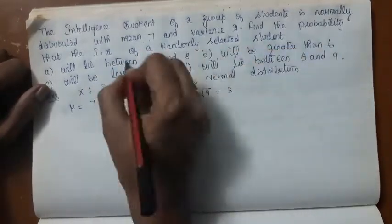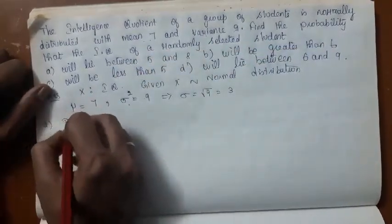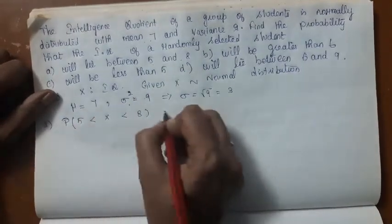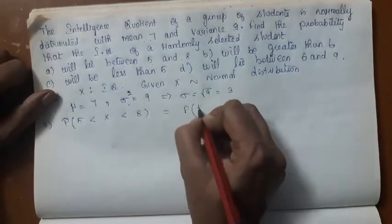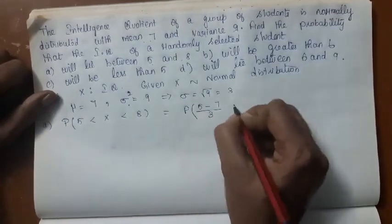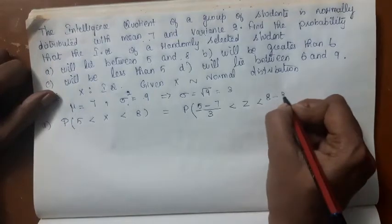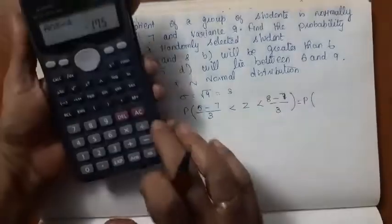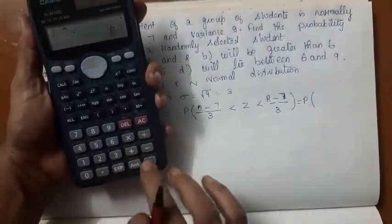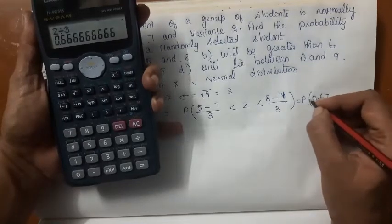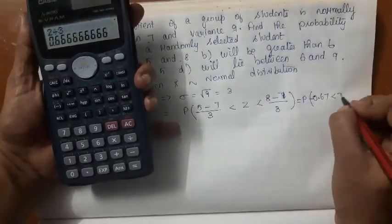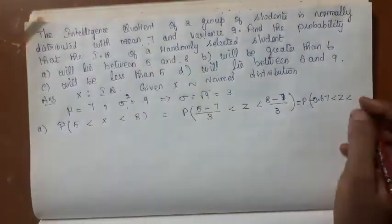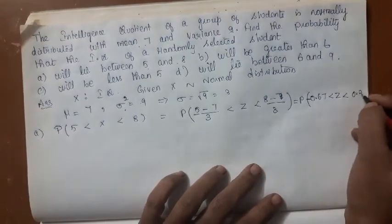Find the probability that the IQ of a randomly selected student will lie between 5 and 8. What is the chance that X is between 5 and 8? So you standardize everywhere. 5 minus 7 by 3 less than Z less than 8 minus 7 by 3. So 5 minus 7 is minus 2, divided by 3 is minus 0.67. 8 minus 7 is 1, 1 divided by 3 is 0.33.